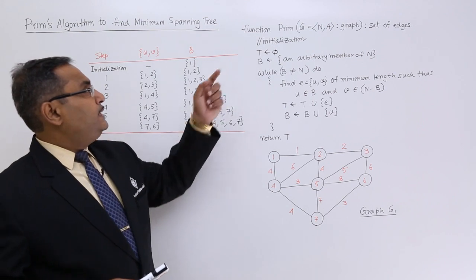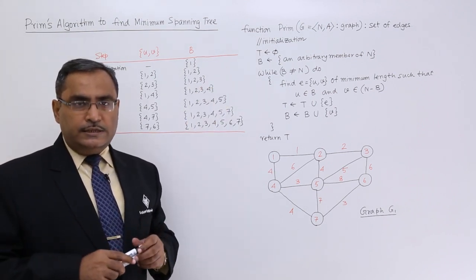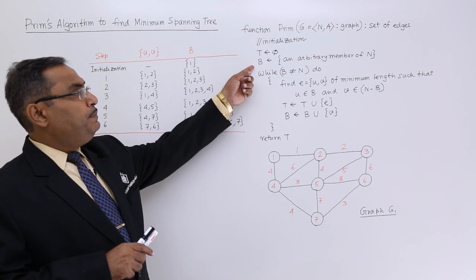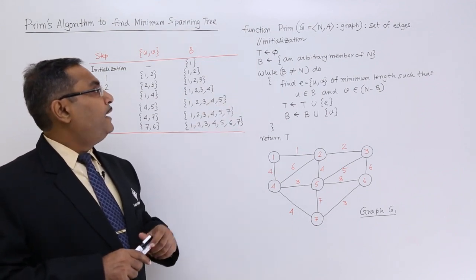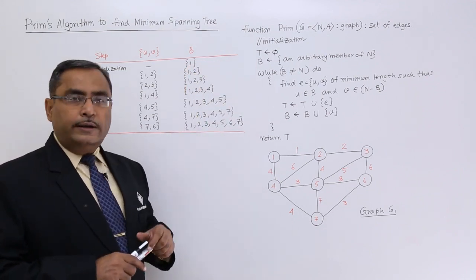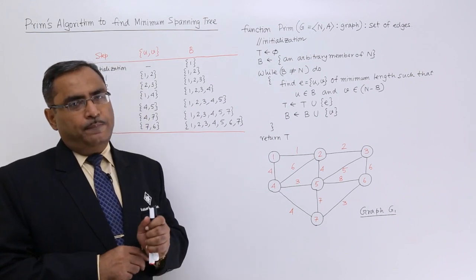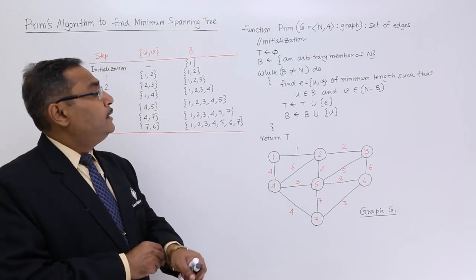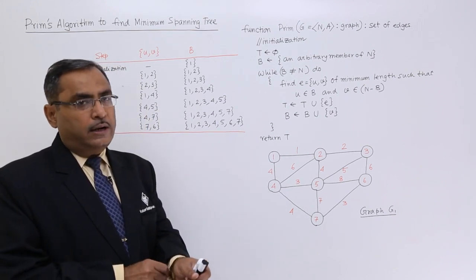Now, t is equal to phi. At first, t equals phi, and then we are having b, an arbitrary member of n. B is having 1 at first, as we have planned that b will have the seed element, which is 1 in this case.